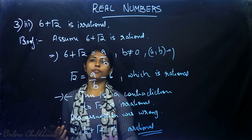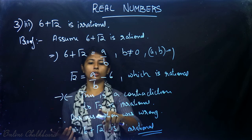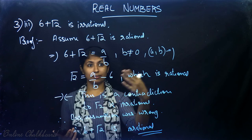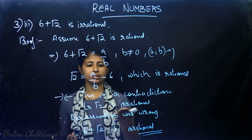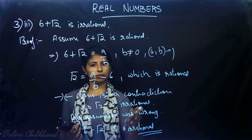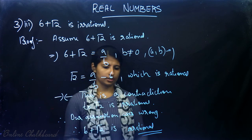Actually, this much is enough for higher marks. If it comes as a bigger higher-mark question, you can prove √2 is irrational separately.